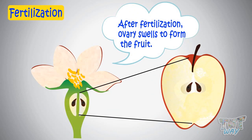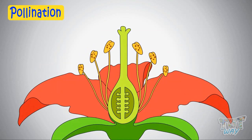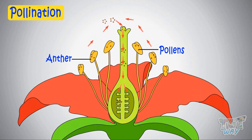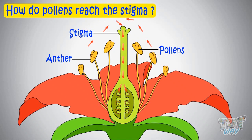Now let's see what pollination is. Pollination is the process by which pollen is transferred from the anther — that is, the male part — to the stigma, which is the female part of the plant, thereby enabling fertilization and reproduction. Now let's see how pollination occurs, or how pollens reach the stigma.